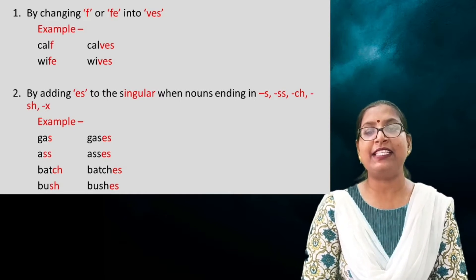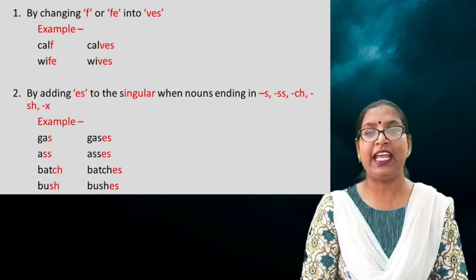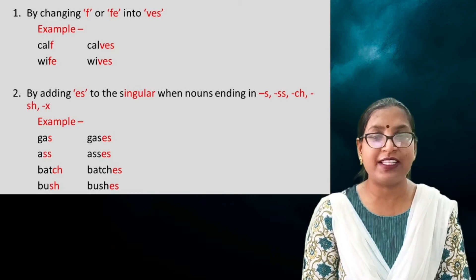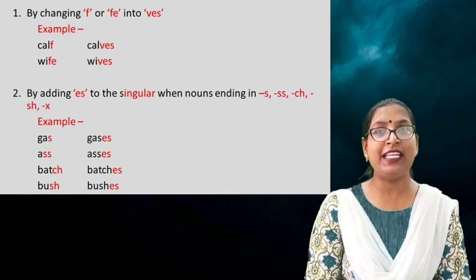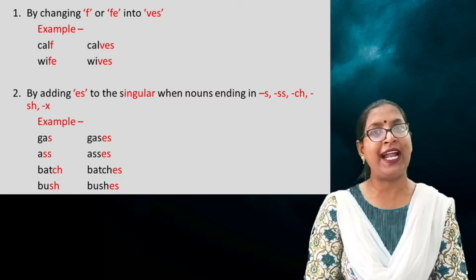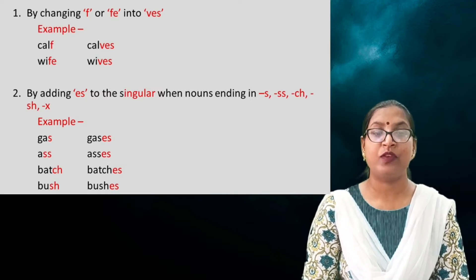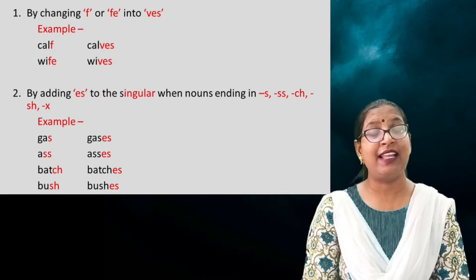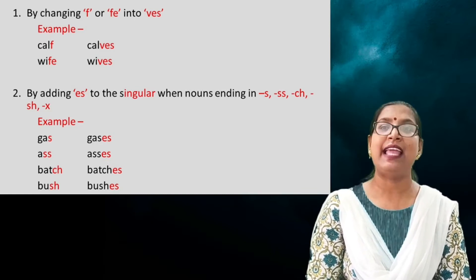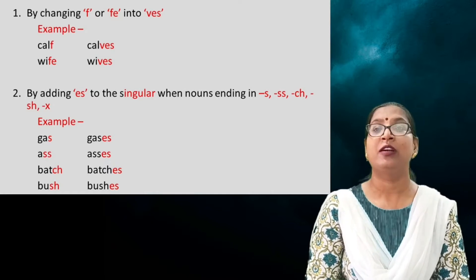Rule two: by adding ES to the singular when the noun ends in S, SS, CH, SH or X. For example, 'gas' — G-A-S, the last letter is S, so we add ES to get the plural form: 'gases'. 'Ass' — A-S-S, the last two letters are double S, so we add ES: 'asses'. 'Batch' ends with CH, so we add ES: 'batches'.